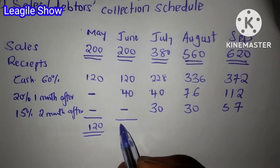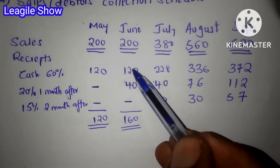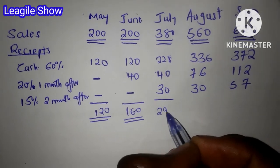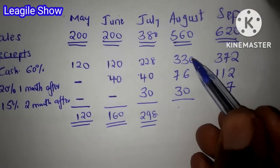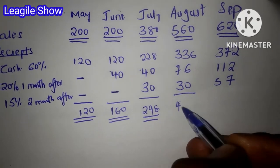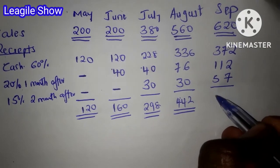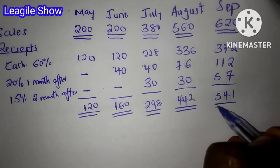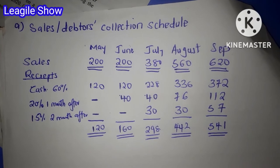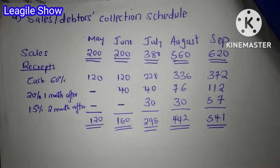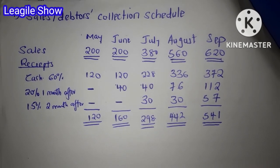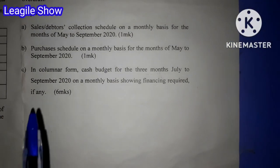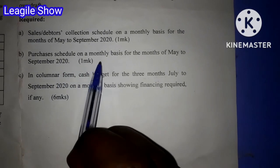Our total receipts: May is 120, June is 120 plus 40 giving 160, July adds up to 228 plus 40 plus 30 giving 298, August is 336 plus 76 plus 30 giving 442, and lastly September is 372 plus 112 plus 57 giving 541. So that is our sales or debtors' collection schedule for this company. I'm your tutor Julius. We'll meet in the next video where we'll be looking at the purchase schedule on a monthly basis.